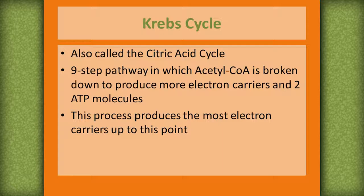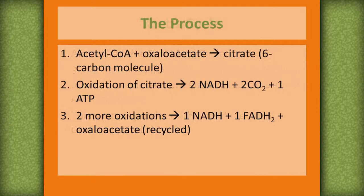This process produces the most electron carriers up to this point. Acetyl-CoA plus oxaloacetate produces citrate, a six-carbon molecule. The oxidation of citrate produces two NADH molecules, two carbon dioxides, and one ATP.